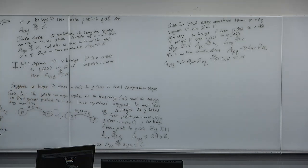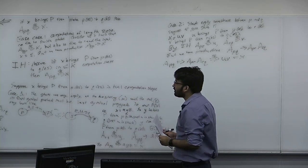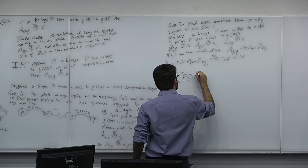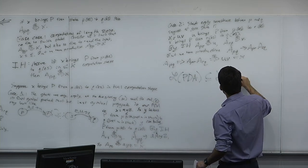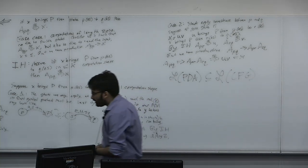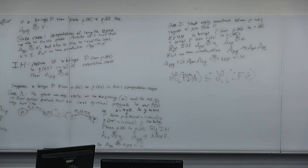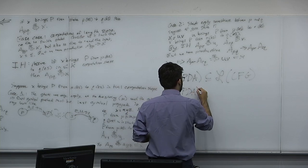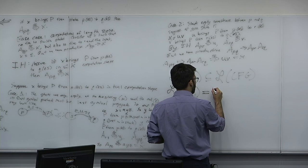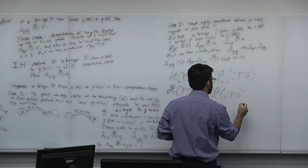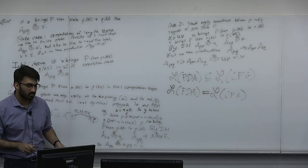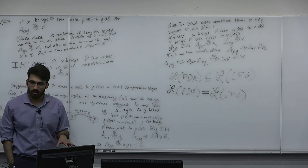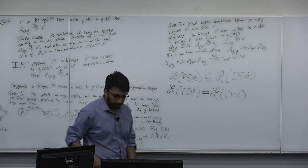This was a very involved proof. We've proven the correctness of our construction and the if-and-only-if. We can now conclude: every language decidable by a PDA has a CFG to produce that language. Combined with the previous result, we can finally say that L(PDA) = L(CFG). These two classes of languages produce exactly and only the same languages—any language with a CFG also has a PDA, and vice versa.